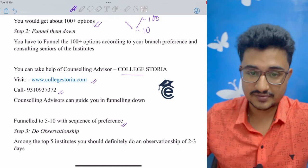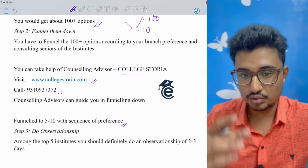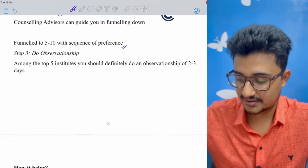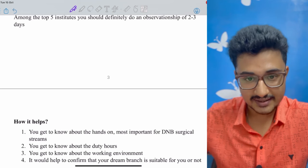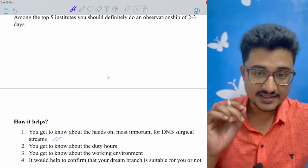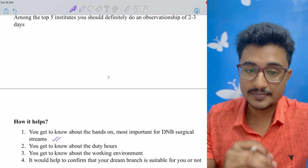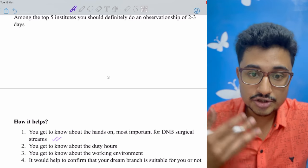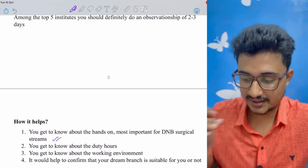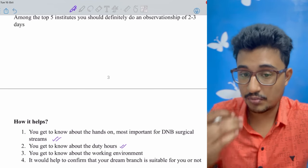There you have to do observationship. What is observationship? Observationship is a kind of internship only for one or two days. You are going to that college and you are working there with the residents. What are the advantages that this observationship would give? It would give you insight about how is the hands-on in that institute. This is more important for the DNB institutes, especially for the surgical streams, because in many DNB institutes there is not much hands-on and the clerical job is more. So this observationship would help you to understand how much is the hands-on. Next thing, you would get clarity about the duty hours, how much duty hours, how much hectic the duties are.